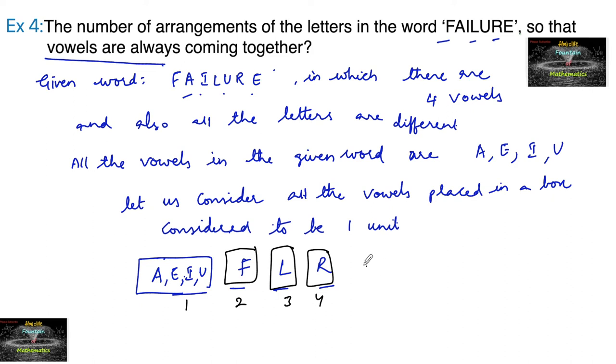And we know that the number of permutations of four different things taken four at a time is nothing but four factorial. So we can write here, therefore, required number of permutations or arrangements is equal to four factorial, that is 4P4.